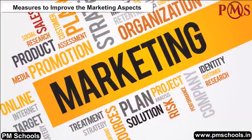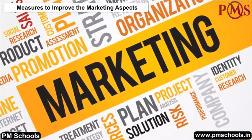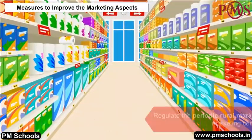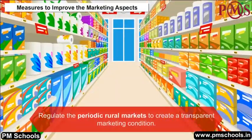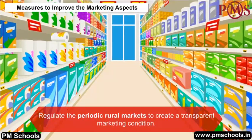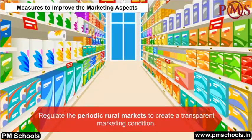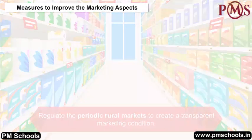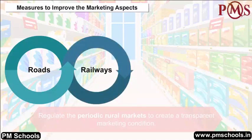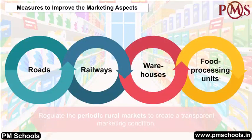Measures to improve the marketing aspects: The most primary step is to regulate the periodic rural markets to create a transparent marketing condition. The second step is to create proper infrastructure like roads, railways, warehouses, and different food processing units.